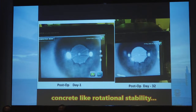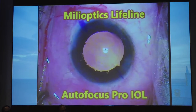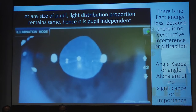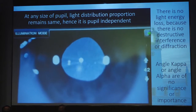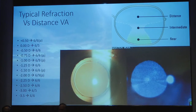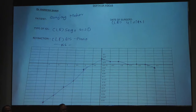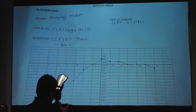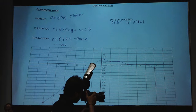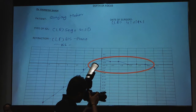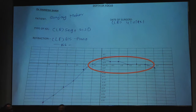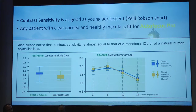Photos taken one month apart confirm concrete-like solid stability. At any pupil size, the ratio of light distribution for distance, intermediate and near remains the same. Typical refraction finding: when over-refracting post-op with anything from +1 to −3.5, vision remains 6/6 or 6/9 — indicating amplitude of accommodation and confirming pseudo-accommodation mimicking the natural human lens of a teenager.